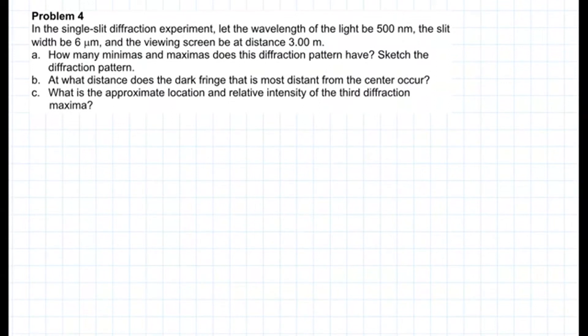Problem 4. In a single slit diffraction experiment, let the wavelength of the light be 500 nanometers. The slit width is 6 microns and the viewing screen be a distance 3 meters. Part A: How many minimas and maximas does this diffraction pattern have? Sketch the diffraction pattern in detail. Part B: At what distance does the dark fringe that is most distant from the center occur? Part C: What is the approximate location and relative intensity of the third diffraction maxima?